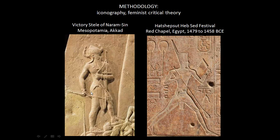Hatshepsut is not holding weapons but rather objects called accoutrements that represent power. This right here is the flail — a shepherd's tool — which has to do with rulership and is affiliated with the god Osiris, who was a shepherd. So this is a way for Hatshepsut to affiliate herself with the gods.